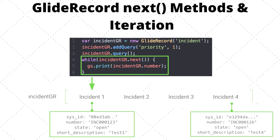One of the most powerful parts of the GlideRecord API is that we have access to all fields on the table we are querying. If we want to print the sys_id or number to the screen, we simply reference, for example, incident.number on line five. While inside the while loop, we have access to the current object — in this case INC0000123 — and the loop continues to the second object in the array, and so on until all four objects have been covered.